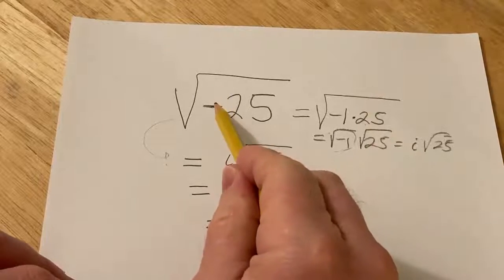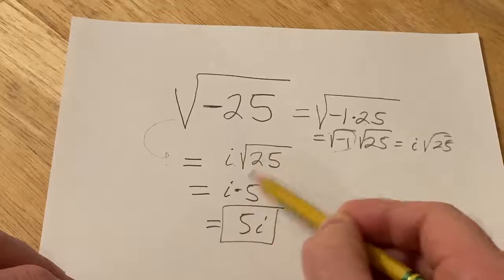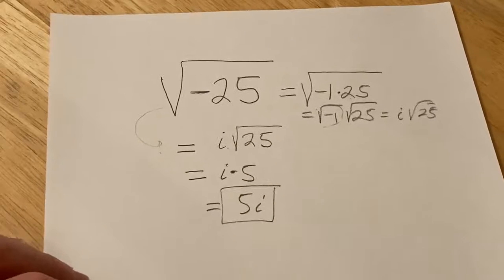So again, first step, whenever you see a negative in a square root, turn it into an i, and then just go from there. I hope this video has been helpful. Good luck.